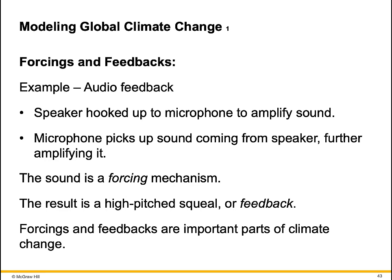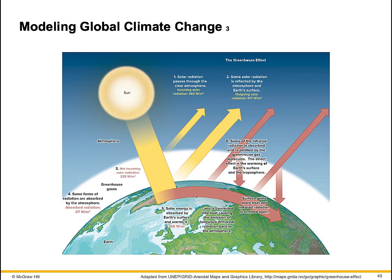Forcings and feedbacks — for example, audio feedback: a speaker hooked up to a microphone to amplify sound. The microphone picks up sound coming from the speaker, further amplifying it. The sound is a forcing mechanism, and the result is a high-pitched squeal, or feedback. Forcings and feedbacks are important parts of climate change. Sunlight is scattered, absorbed, and/or reflected by Earth. More reflected means more cooling; more absorbed means more warming.